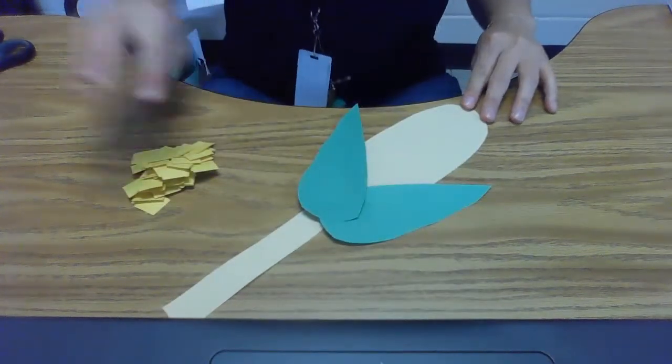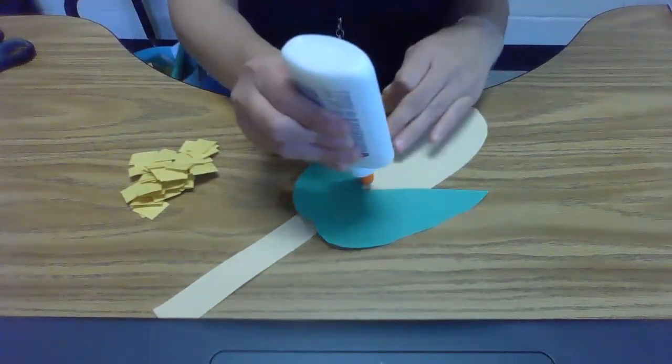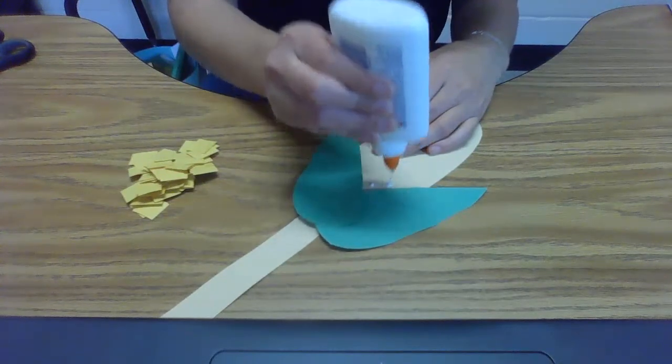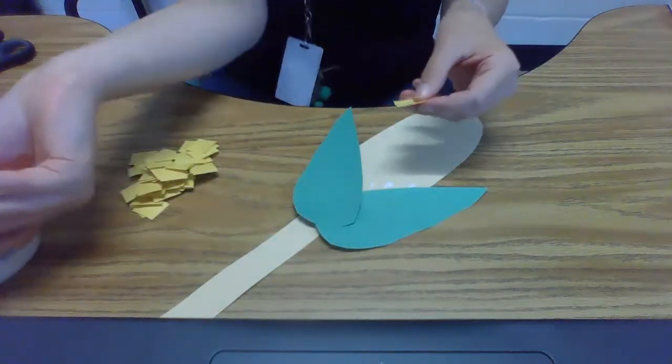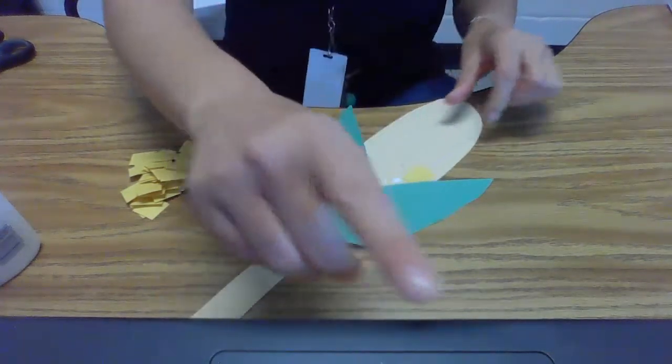So I have a bunch of yellow kernels and I'm going to glue them carefully onto the corn ear. Just put a little dot of glue and glue down those corn kernels. I'll show you what it looks like when it's finished.